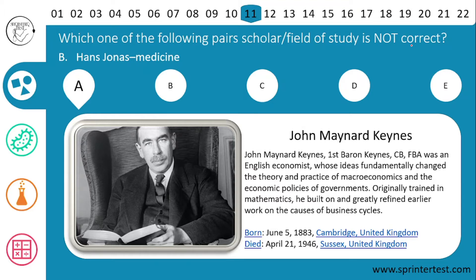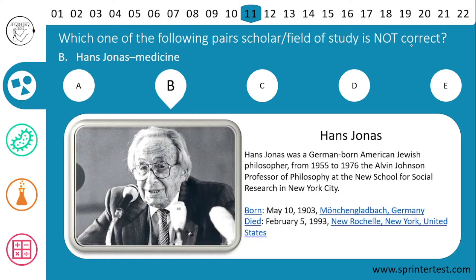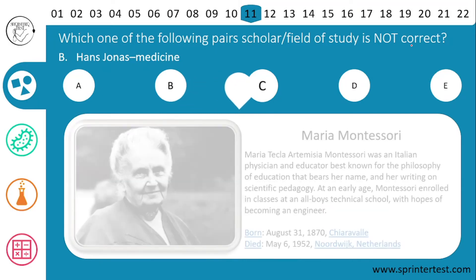Moving to B, Hans Jonas was a German-born American Jewish philosopher. From 1955 to 1976 he worked as a professor of philosophy at the New School for Social Research in New York City. His contribution to medicine was very low because he was a professor of philosophy — so his field is philosophy, not medicine. That is why this answer is incorrect, and B is selected as the false pair.